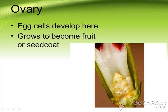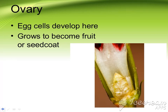The ovary is basically the female reproductive part, in which egg cells develop. These are the female reproductive cells. The ovary grows to become a fruit and seed coat. When ovaries start to convert, they become either a seed coat — which will be covered — or a fruit. As you can see when we eat fruits, seeds are present inside.